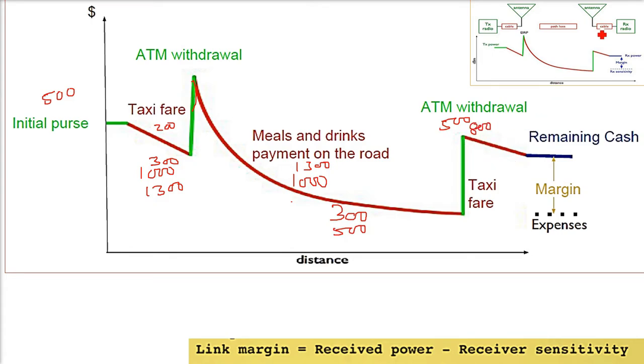You spend some money on meals and drinks. This is a big loss, a very big loss. Say $1,000 you spent. You had $1,300, you only have $300 now. Now you again have to go for taxi. You made a withdrawal of $500. How much do you have? $500 plus $300, $800 you have. Now there will be cable losses, $300 again. You have $500 remaining.